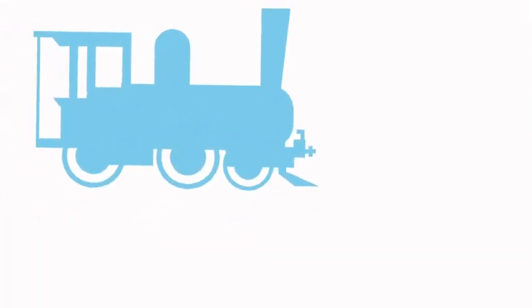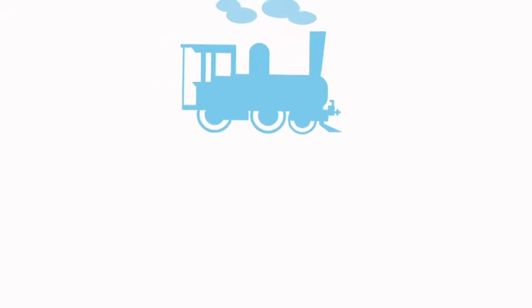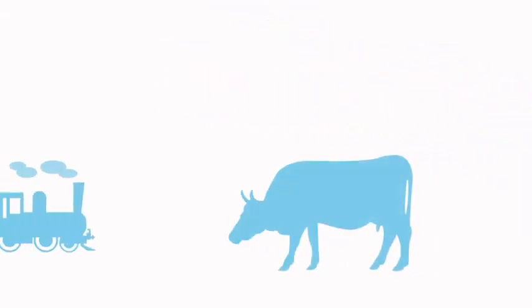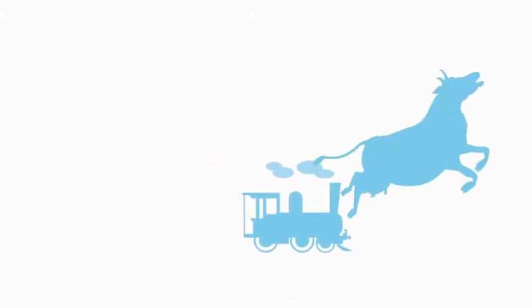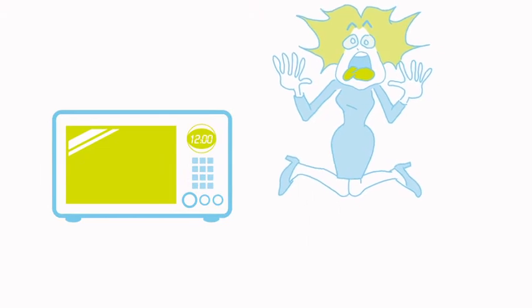But that's what many people have said about most technological advances that have helped us progress. In the 19th century, people believed that trains would frighten cows so much that they would no longer be able to produce milk. More recently, some people feared microwaves. Now almost everyone has one in their home.